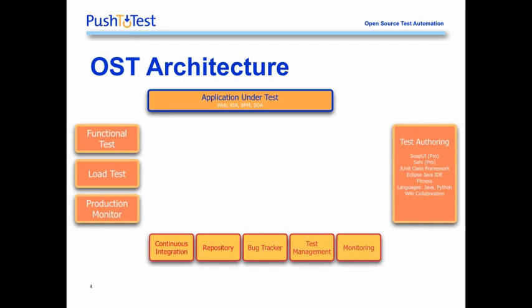Open-source testing provides a rich, open architecture that makes it easy for teams doing functional testing, load testing, or production monitoring to automate the surfacing of performance bottlenecks and functional issues. Oftentimes, organizations will start with a continuous integration environment, or maybe a bug tracker or a source code repository. Then it becomes the tester's requirement to develop test scripts that will test the application under test. They have many different options, including tools like SOAP UI, SAHI, Selenium, or writing unit tests in a variety of high-level languages including Java, Python, and PHP.